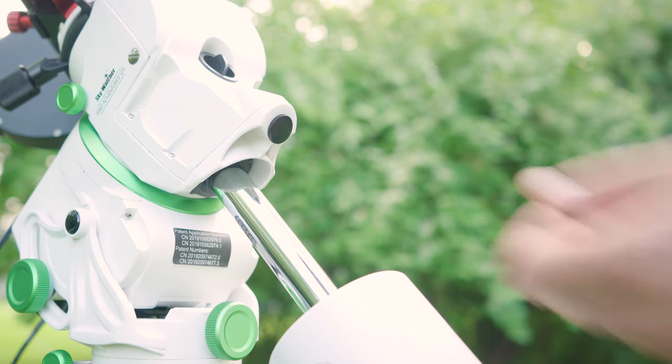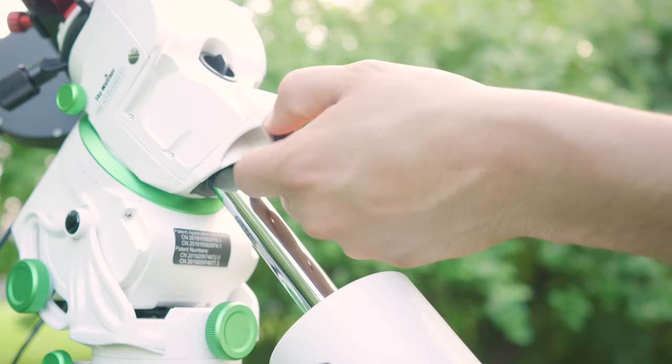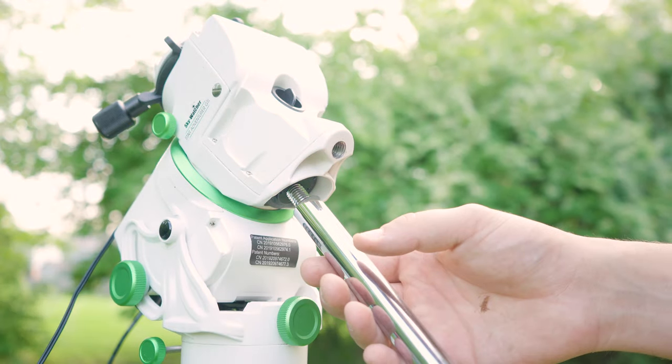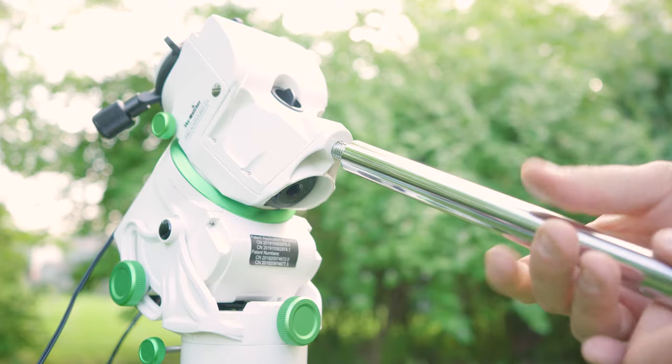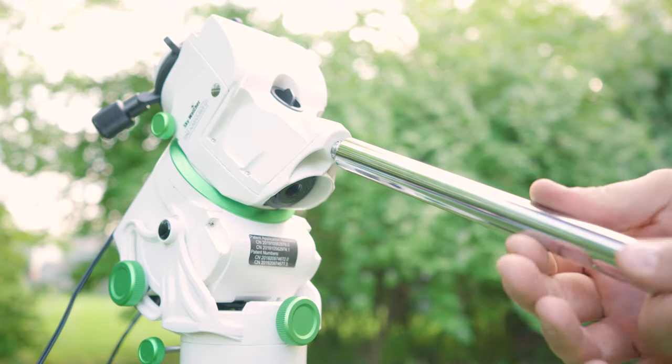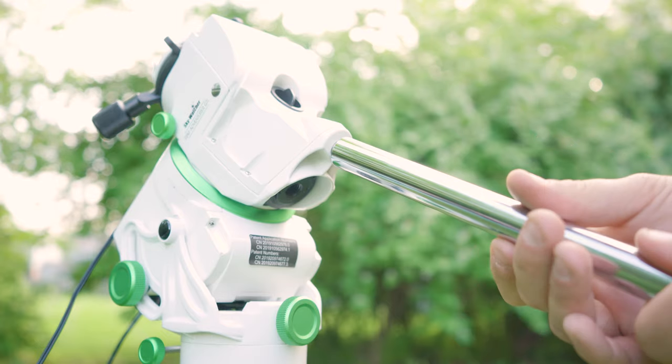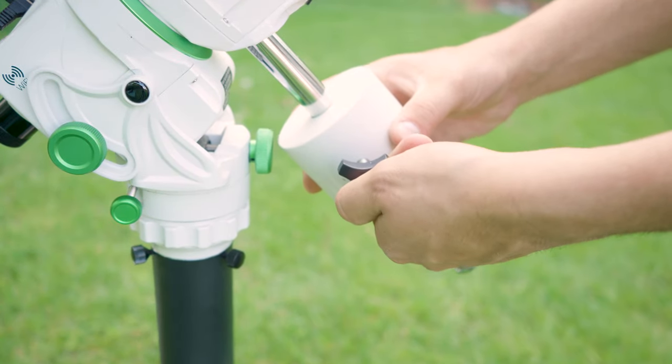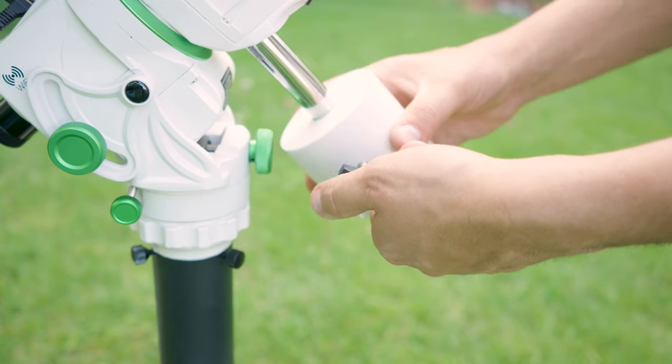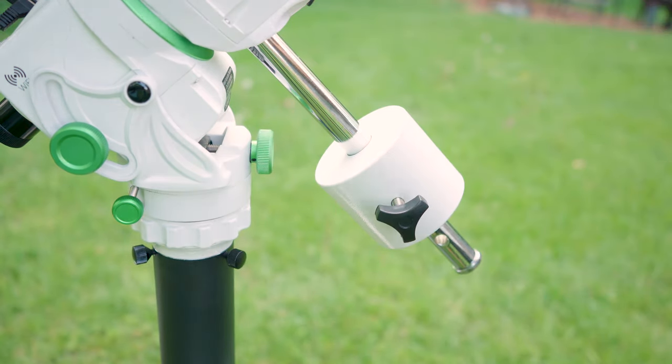If you look on the front of the mount head you will see two different positions for where you can place your counterweight shaft. For those of you who live in lower latitudes you can adjust the counterweight bar to the upper position. If you are using an imaging train that requires your counterweight to be pushed to the very top of your counterweight shaft you can also move your counterweight shaft to the upper position so that the counterweight itself doesn't run into the latitude adjustment knob.